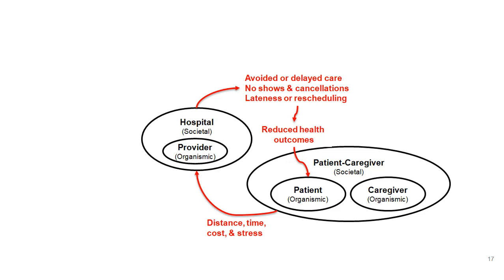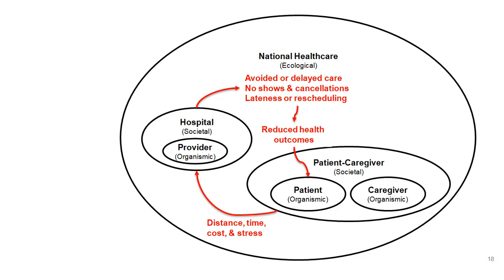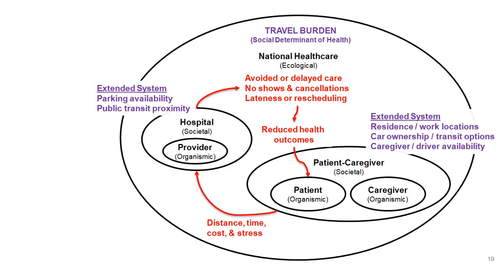The patient or patient-caregiver pair notices that distance, time, cost, and stress make it difficult to visit their provider at the hospital. That results in a cycle of potentially avoiding or delaying care — no-shows, cancellations, lateness, and rescheduling — and the hospital suffers with those administrative overheads. The outcome is reduced health outcomes for patients. If the root cause is the distance, time, cost, and stress associated with getting to the hospital, then as a hospital I would want to know about that and potentially model solutions around it.